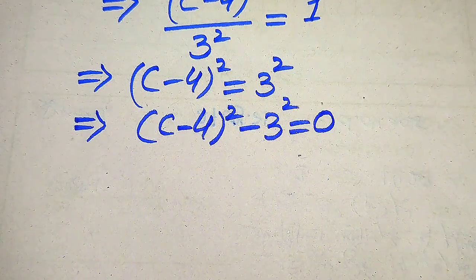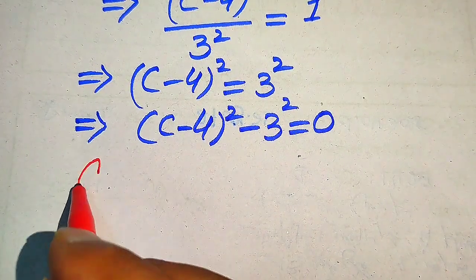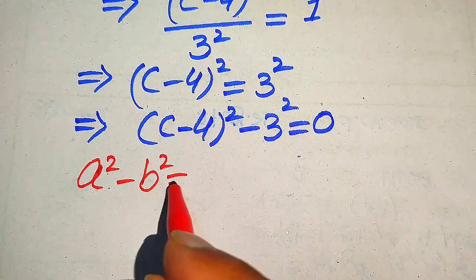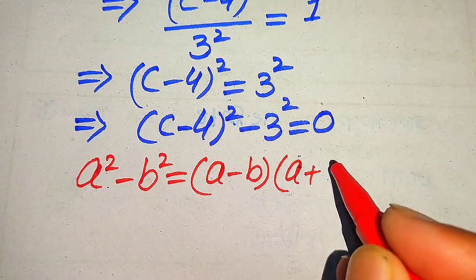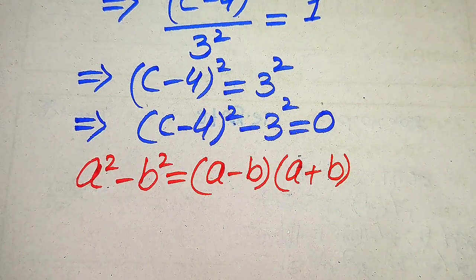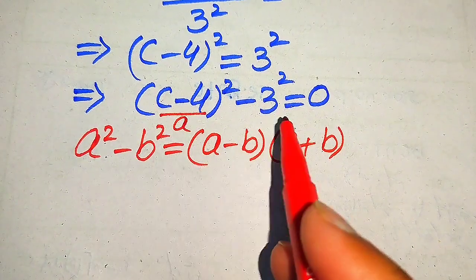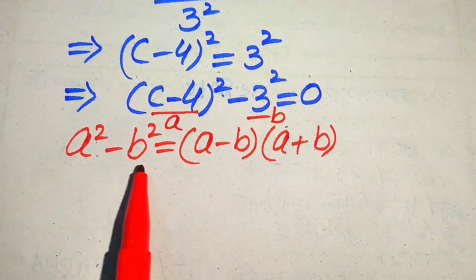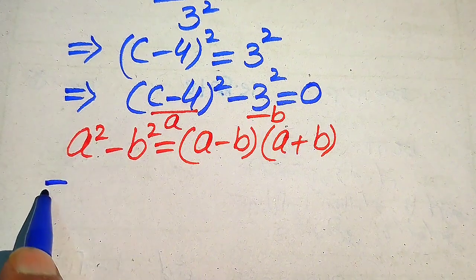In the next step we use the algebraic formula: a squared minus b squared equals (a minus b)(a plus b). Here the base of the first term is our a and the base of the second term is our b. According to this formula, we rewrite the above equation in this form.